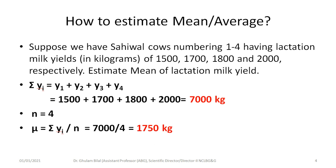We have a small example. We have four cows with lactation milk yields of 1500, 1700, 1800, and 2000 kilograms respectively. To estimate the mean, we compute sigma yi, which is y1 plus y2 plus y3 plus y4, coming to 7000 kilograms. We have four cows, so 7000 divided by 4 equals 1750 kilograms.